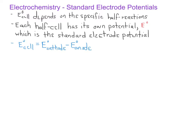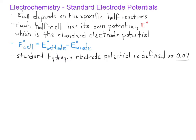Individual standard electrode potentials do not have a specific known value — rather, their values are relative. What that means is we can define one specific electrode to have a potential of zero, and other electrodes will be higher or lower potential relative to that standard electrode. In most situations, we use the standard hydrogen electrode to serve as the reference with zero voltage.